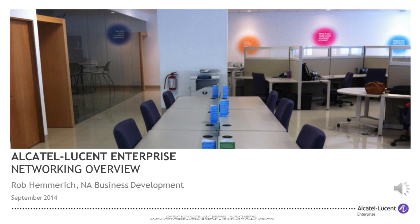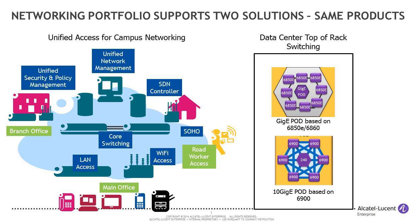I wanted to first introduce the concept of Alcatel-Lucent Enterprise's networking portfolio. The portfolio covers two prime solutions. One we call Unified Access, which covers the campus networking environment — everything from the main office of a campus, as well as a branch office, road worker, or someone working from home in a SoHo environment.